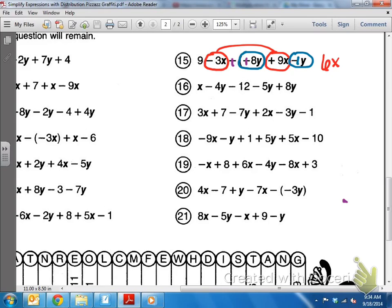And then we have positive 8 minus 1y, different signs, subtract. 8 minus 1 is positive 7y. And like I said, the 9 doesn't have a buddy, so we just tack it on the end and it's a positive 9.